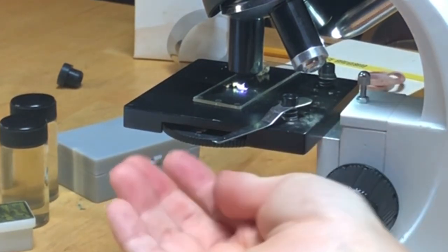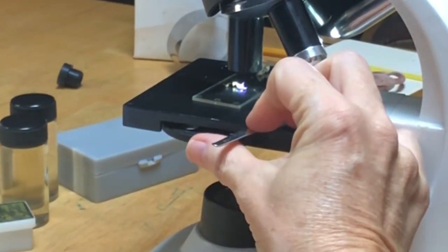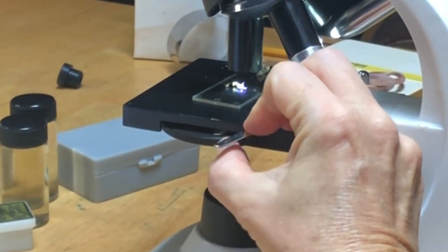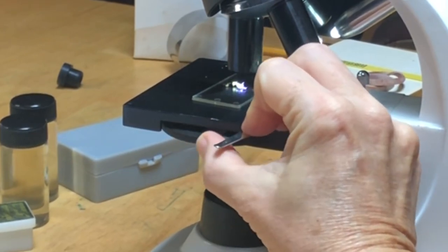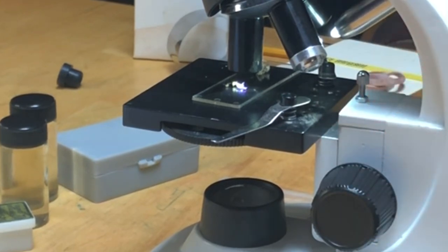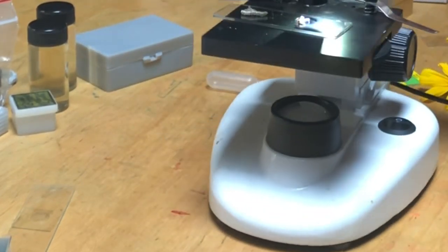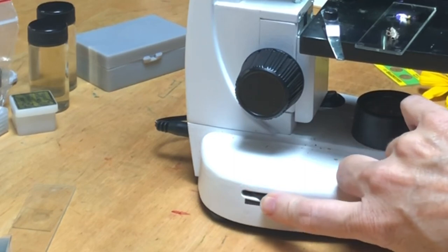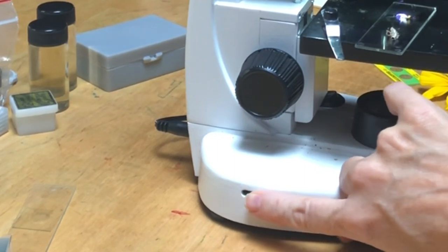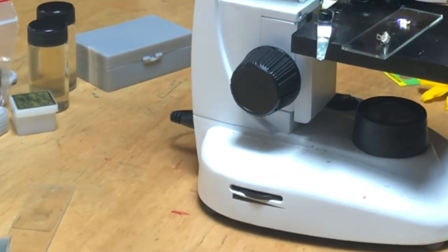On my compound microscope there are two ways to adjust the light that comes in. I have this right below the stage that has a series of holes in it that are different sizes that adjust the amount of light, like an iris, that can come up through the stage. And then on the bottom here, let me see if I can turn my microscope around, I have this dial here that controls the brightness of the light.